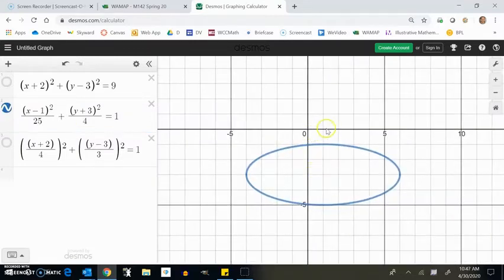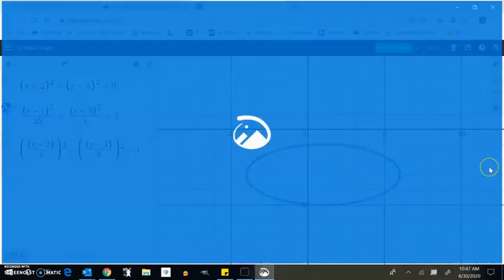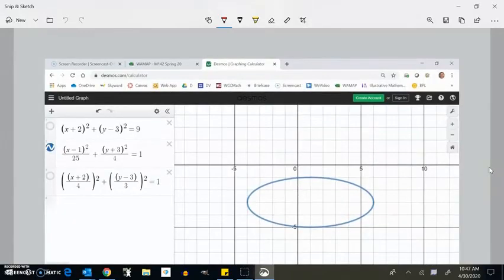All right, so there's my center 1, 1, 2, 3, 1, negative 3, and then in the x direction 1, 2, 3, 4, 5, I'm offset by 5 in the y direction. I'm offset by 2 because this is a 2 squared and this is a 5 squared.